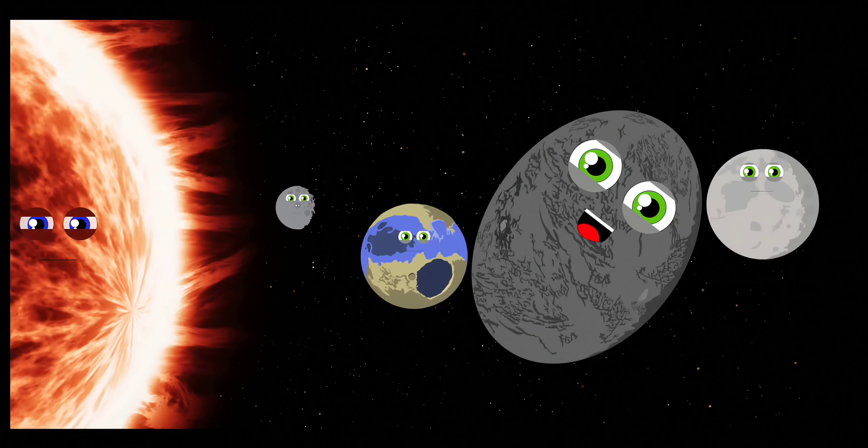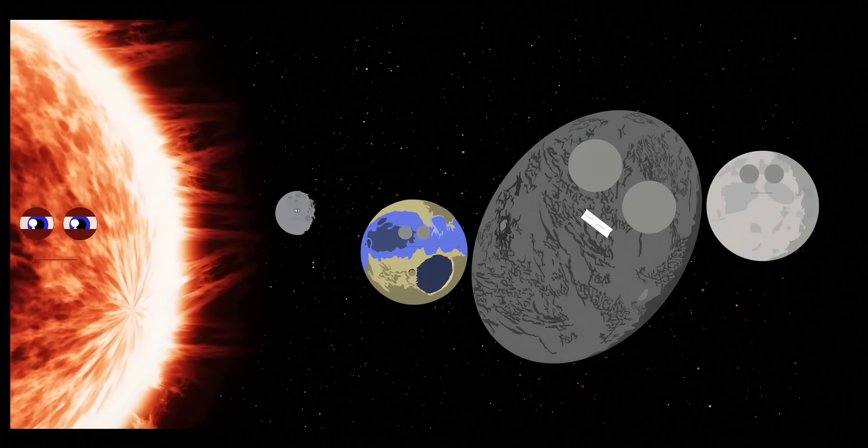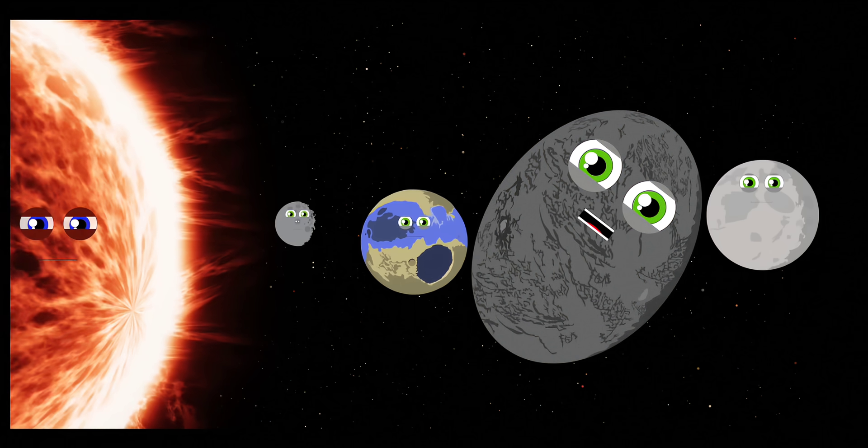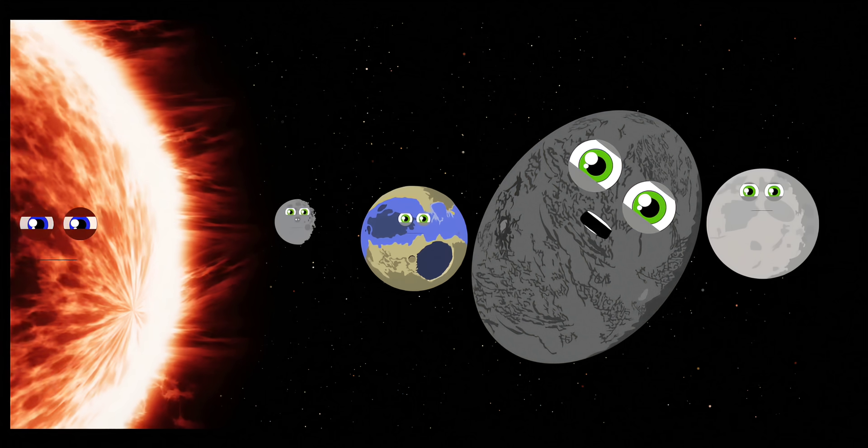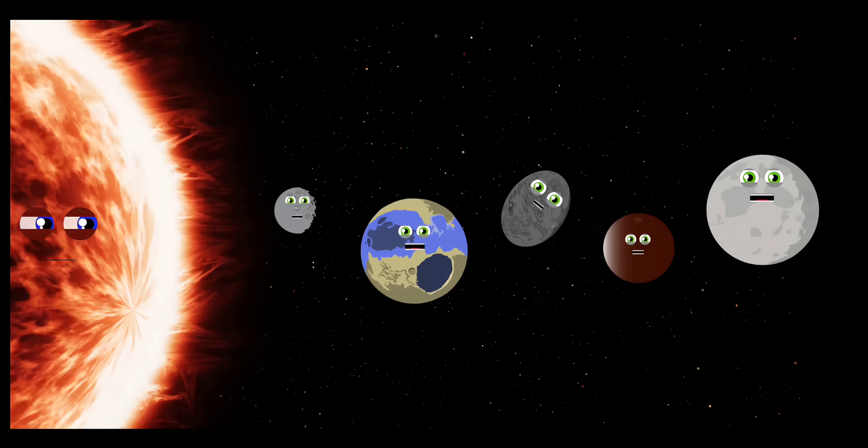My name's Haumea. I am oval-shaped due to the fast rotations that I make. I take 285 years to orbit the sun because I am so far away.